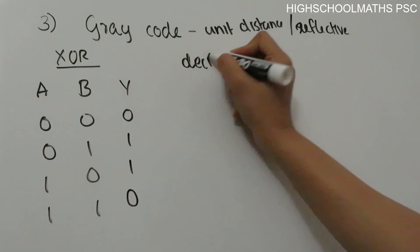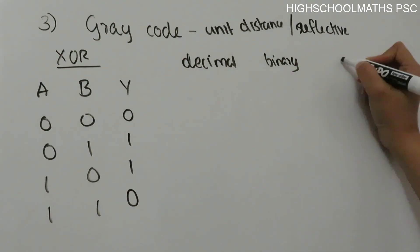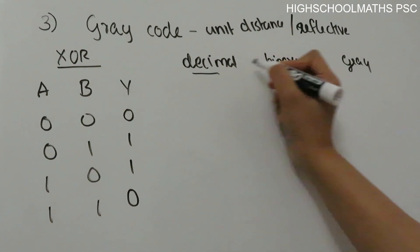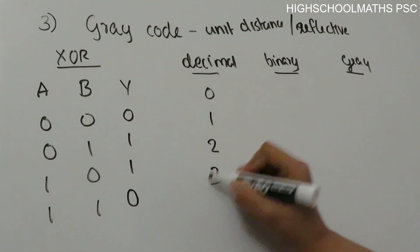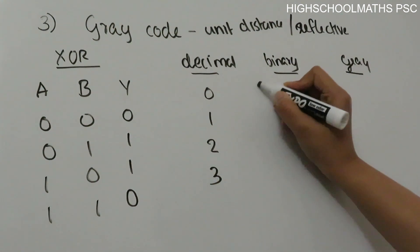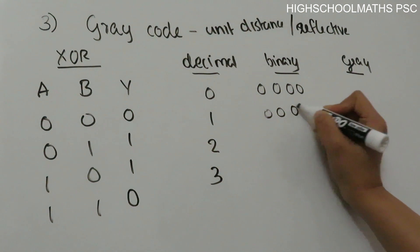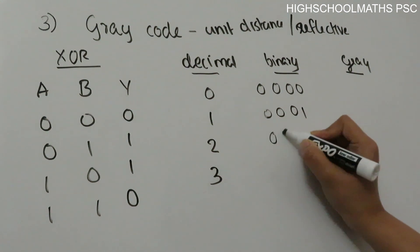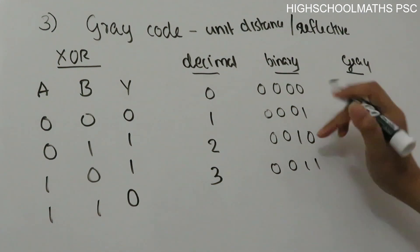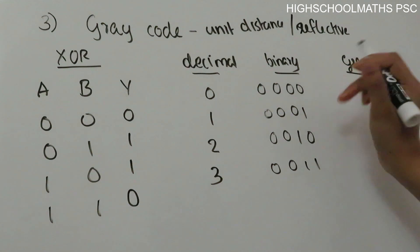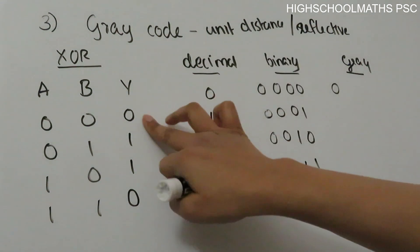Let's look at the decimal, binary, and Gray code table. For decimal 0: binary is 0000. For decimal 1: binary is 0001. For decimal 2: binary is 0010. To convert binary to Gray code, the first bit is copied directly, and each subsequent bit is obtained by XOR of consecutive binary bits.